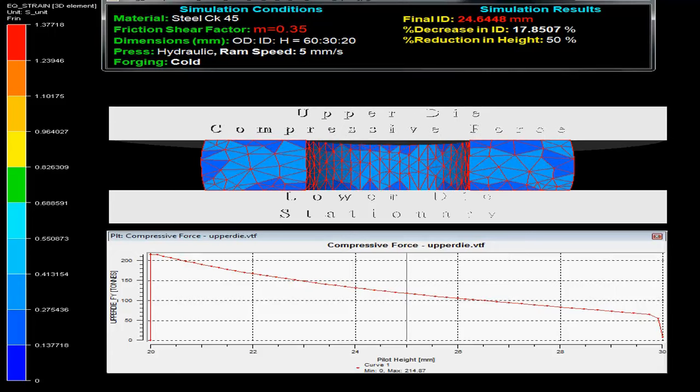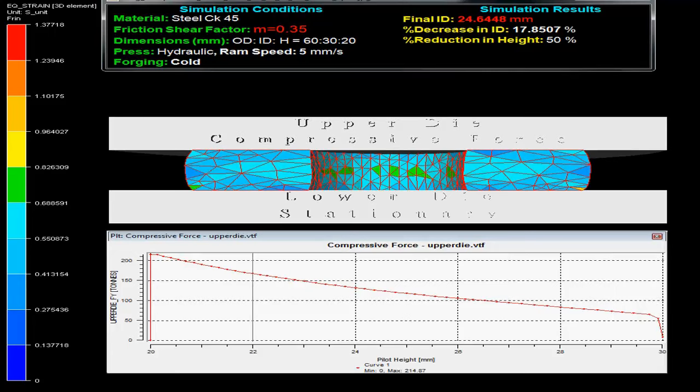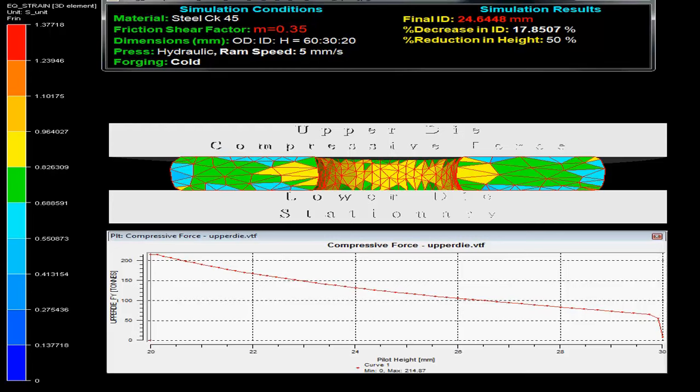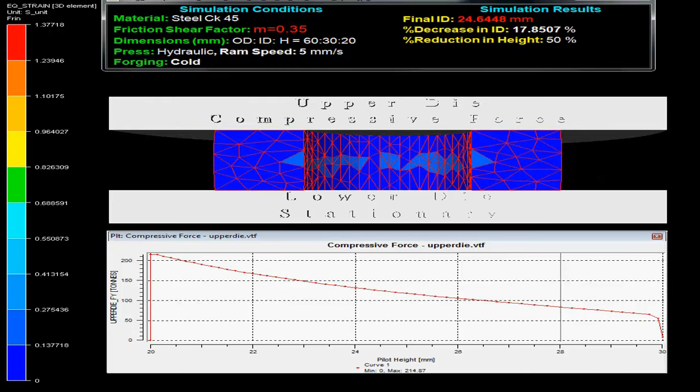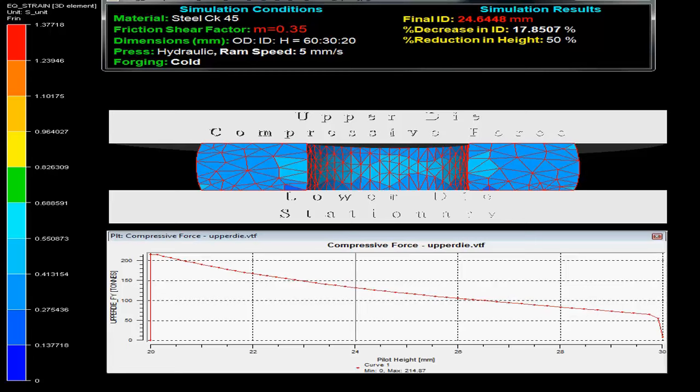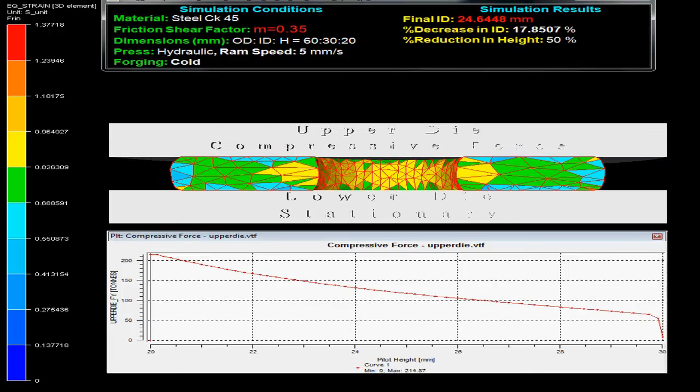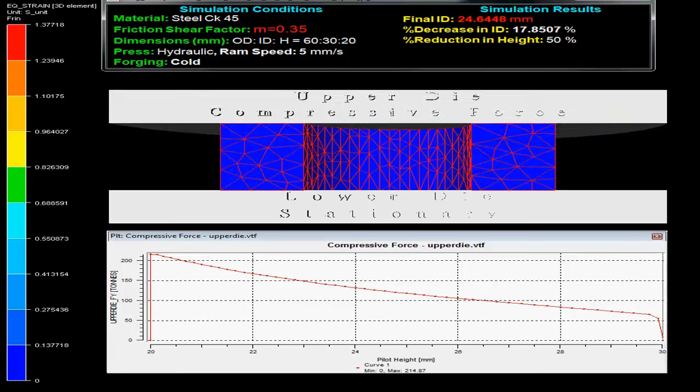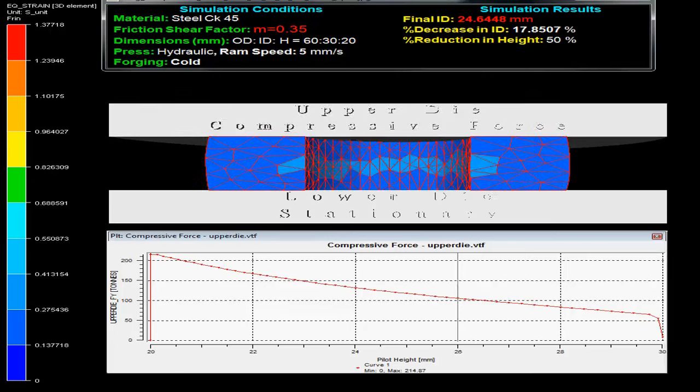Ring compression test has been widely used as a test to evaluate the friction condition in metal forming process. The video shows that a short ring specimen is plastically compressed between two flat dies with lower die stationary and upper die movable.